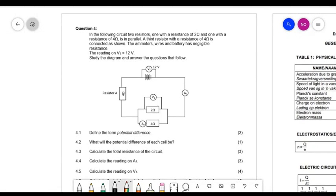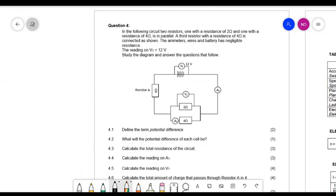On to the last question. There I give you the circuit and I say we have two resistors that are in parallel. One is 2 ohms and one is 4 ohms, and then there's a third resistor that is not in parallel with them. It's also 4 ohms, and the ammeter and the wires and everything have negligible resistance. The total potential difference of the battery is 12 volts. Then they first ask you to define potential difference. I'm not going to do the definitions with you on the video. You can go read them in your memo or in your textbook. Then they ask what will the potential difference of each cell be. Now in the battery there are several cells, so this one has 3 cells, so each one of them must have a potential difference of 4 volts.